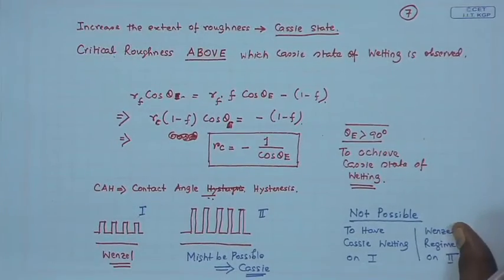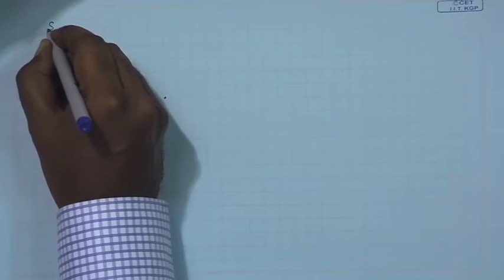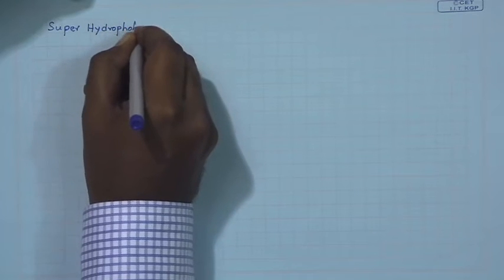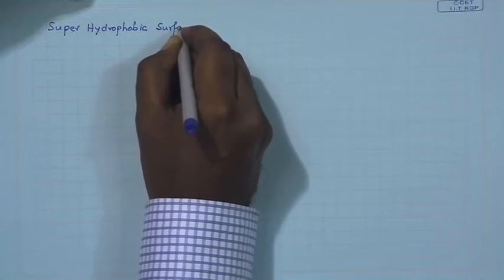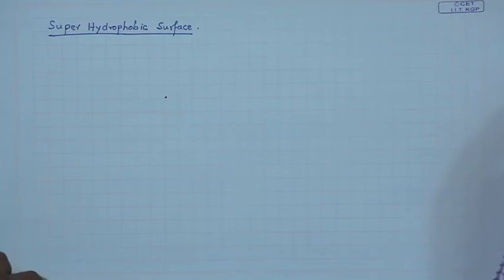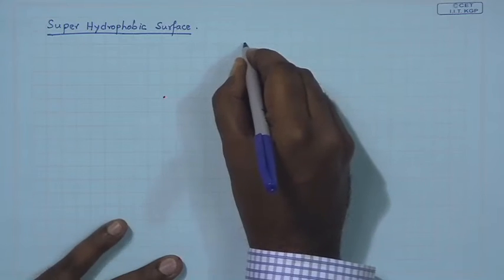I have used the term super hydrophobic surface several times. A surface on which the water contact angle is more than 90 degrees is conventionally termed hydrophobic. Before I can define super hydrophobic surface accurately, I need to highlight another critical aspect: what is known as contact angle hysteresis.